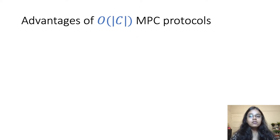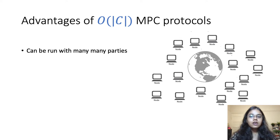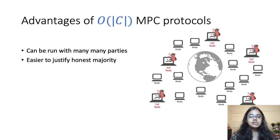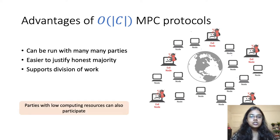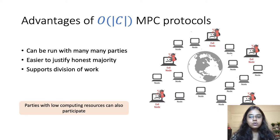Before talking about how or whether this question can be solved, let's first discuss some advantages of an order C MPC protocol. Since there is no linear dependence on the number of players in the total complexity, it can be run with many, many parties. Moreover, when the number of participating players is large, the honest majority assumption becomes significantly easier to justify. Also, the work required from each party is proportional to the order of the circuit divided by the number of parties, which means that the more the number of players, the better it is. In such cases, parties with low computing resources can also potentially participate.